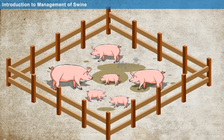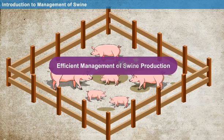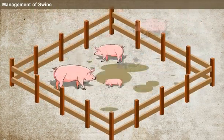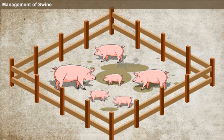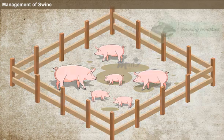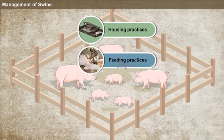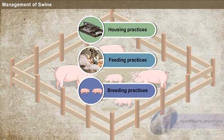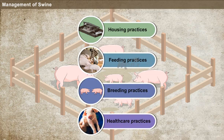Now let us learn how to efficiently manage the production of swine. Swine management comprises certain practices that are to be followed for better production. They include housing practices, feeding practices, breeding practices, and healthcare practices. Let us discuss them one by one in detail.